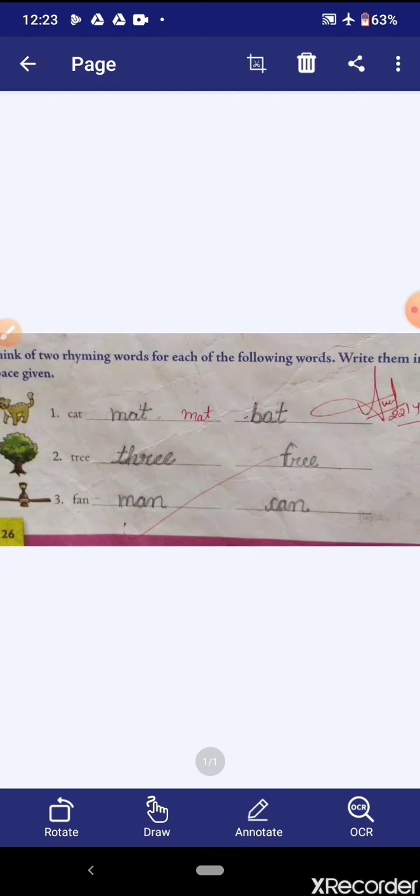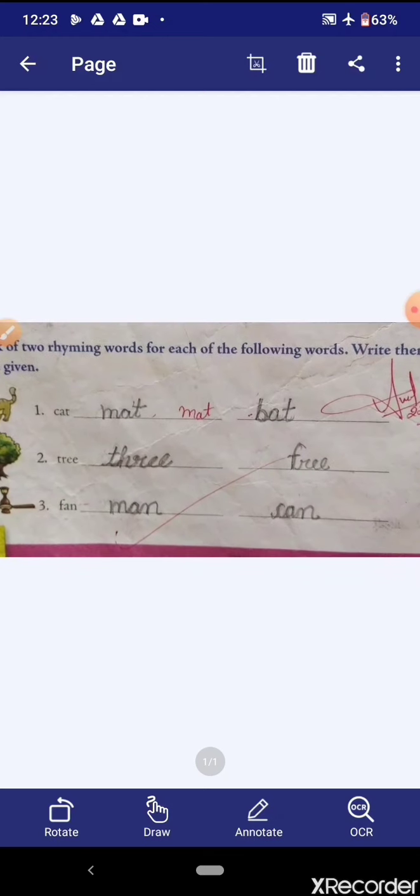Now come to the next word: tree. Its rhyming words are three, T-H-R-E-E, and free, F-R-E-E. Again, I am repeating, listen carefully: three and free. Now come to the third word: fan. Its rhyming words are man, M-A-N, and can, C-A-N.